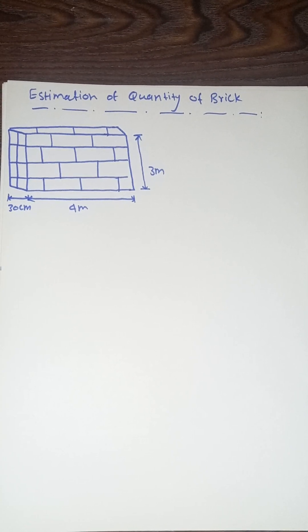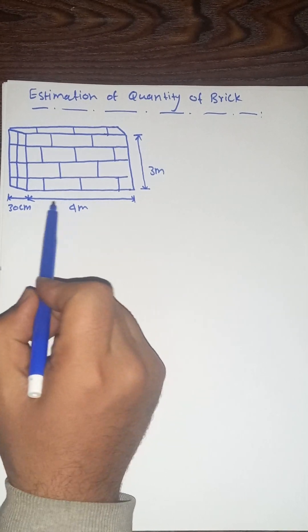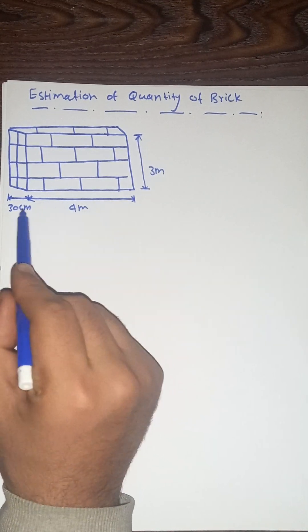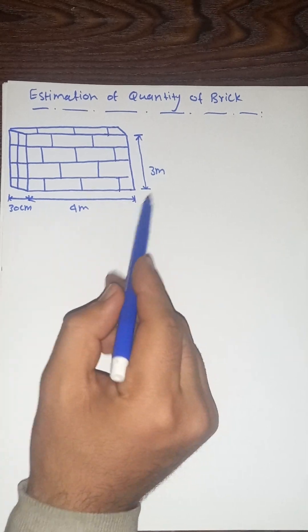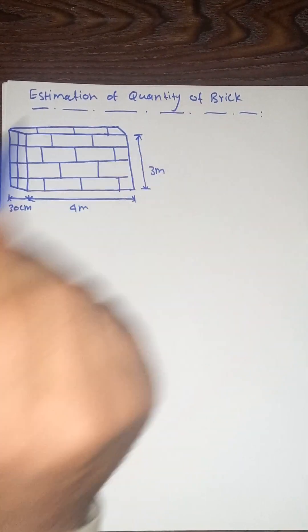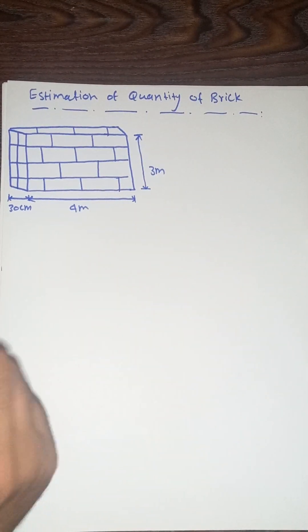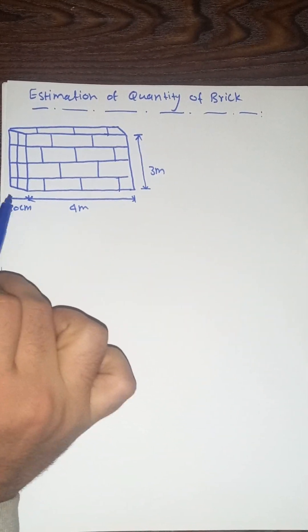In this episode we are going to estimate the quantity of the brick. Suppose that we have a wall where the length of this wall is 4 meters, the height of this wall is 3 meters, and the thickness of this wall is 30 cm.